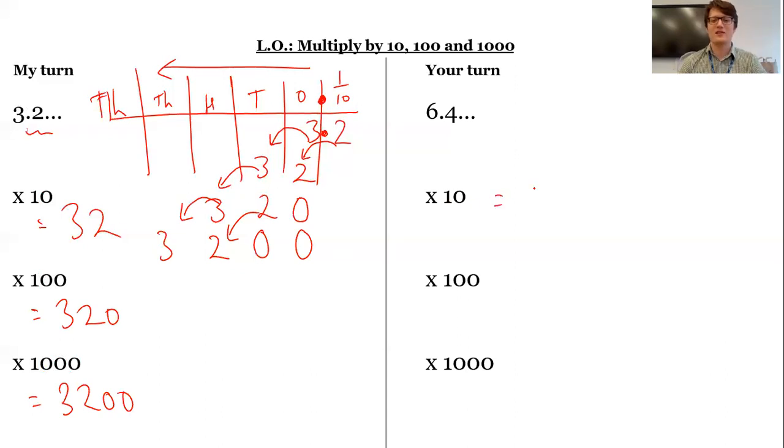Okay, here we go. So we get 64, 640, and 6,400.